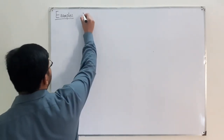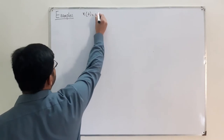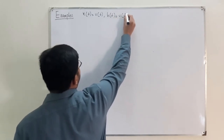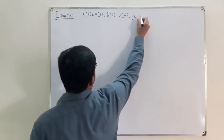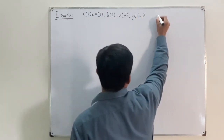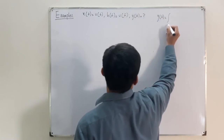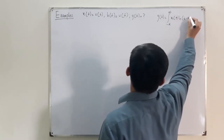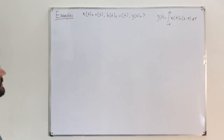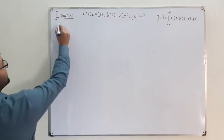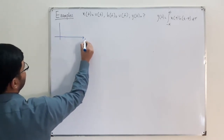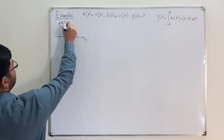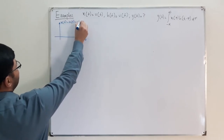Let's say my x of t is the step signal u of t, my impulse response h of t is also u of t, and y of t is unknown. We know that y of t, the output of the system, is computed by the integral from negative infinity to positive infinity of x(τ) h(t − τ) dτ. First, let me draw the graph with respect to t: x(t) = h(t) = u(t).